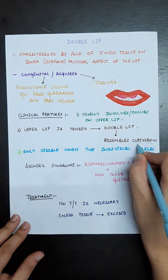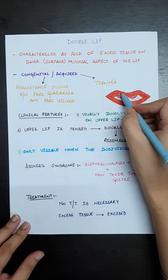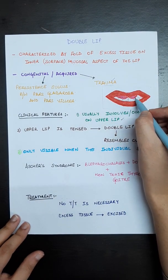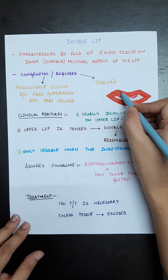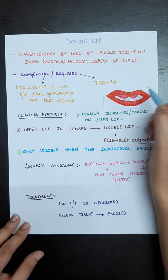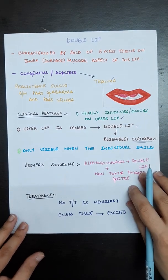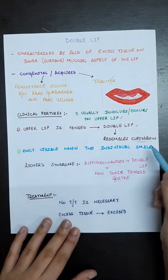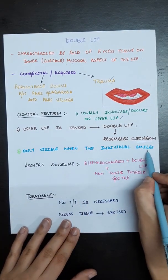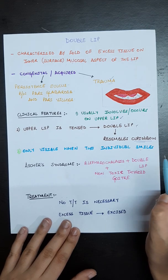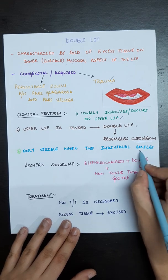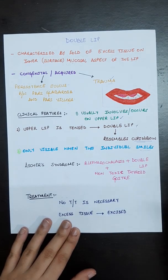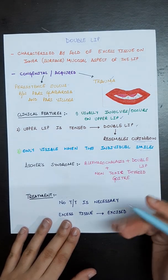Double lip resembles the cupid's bow, as you can see here. It is only visible when the individual smiles — whenever the individual smiles, you will be able to appreciate it.